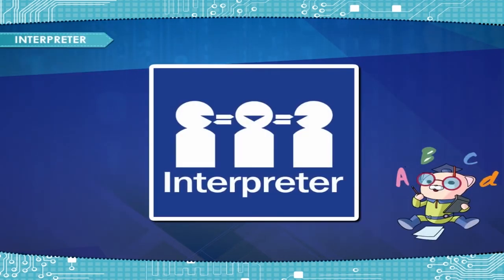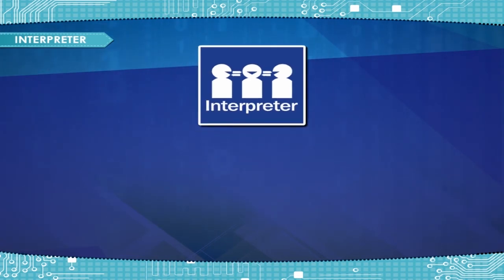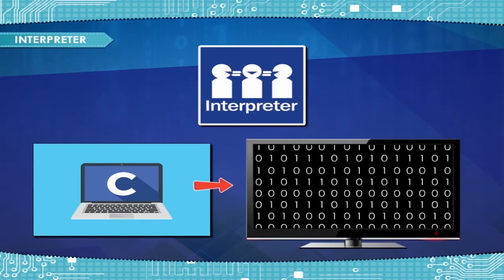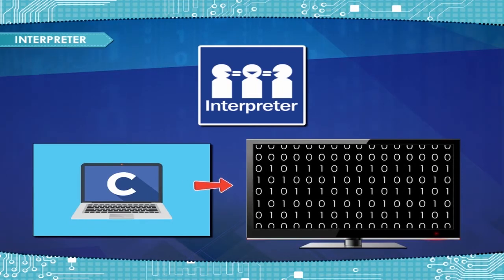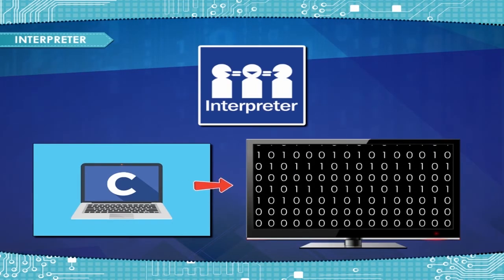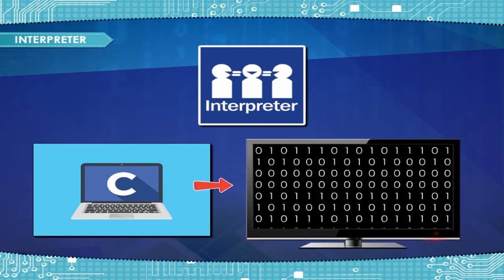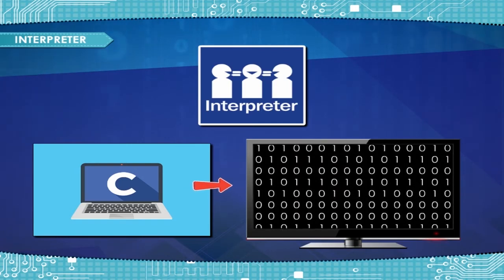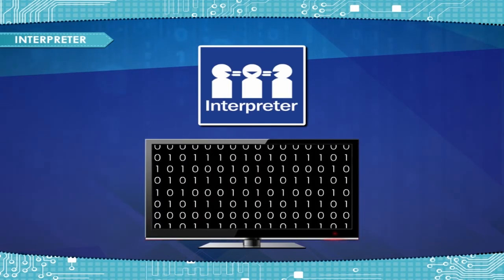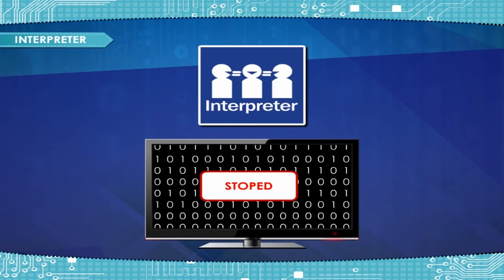An interpreter is a translator program that converts HLL programs line by line. If there is any error at any point or line, program execution will stop until the error is removed or debugged.